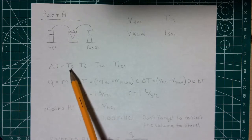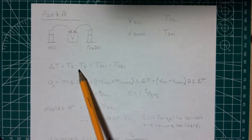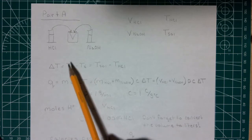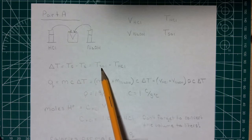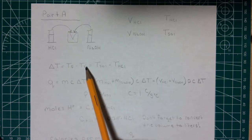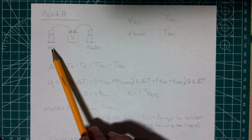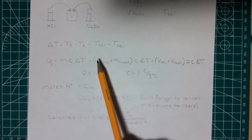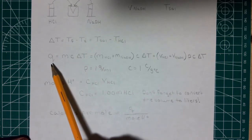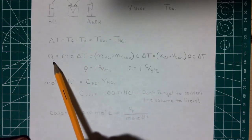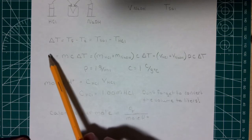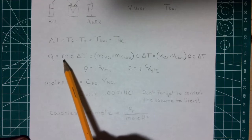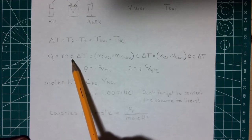The first thing it's going to ask you is the temperature difference. The temperature difference is always the final temperature minus the initial temperature. So in this case, the final temperature is the mixed solution temperature, T_solution, and the initial temperature is the initial temperature of the HCl. The next thing it asks about is the heat released, which we'll call Q.